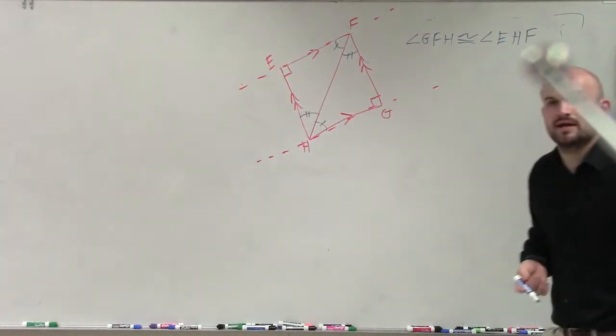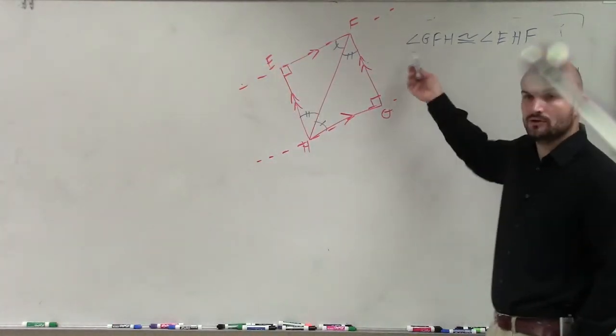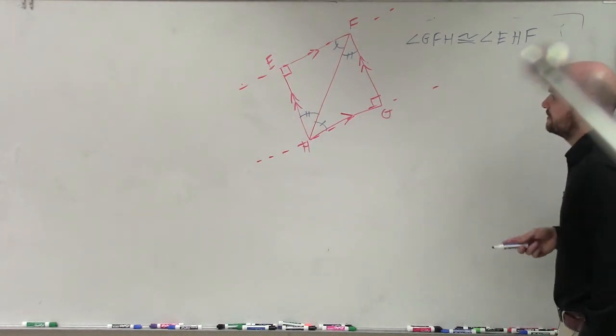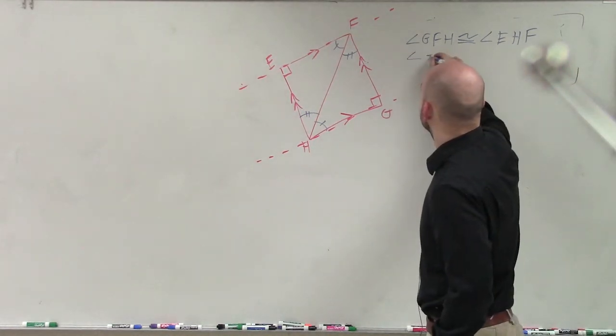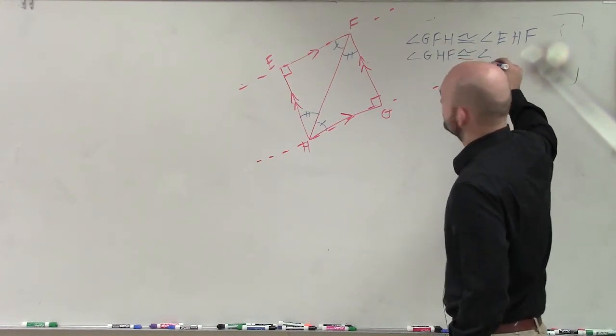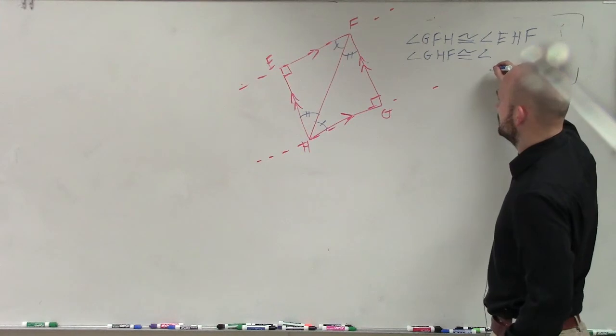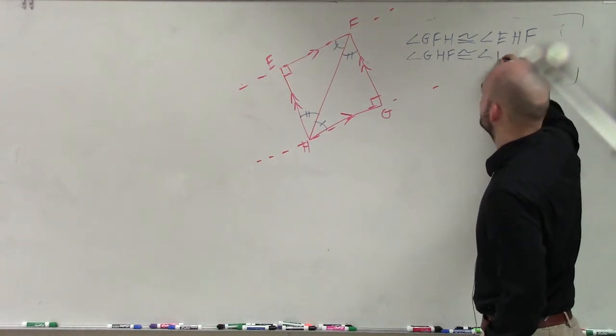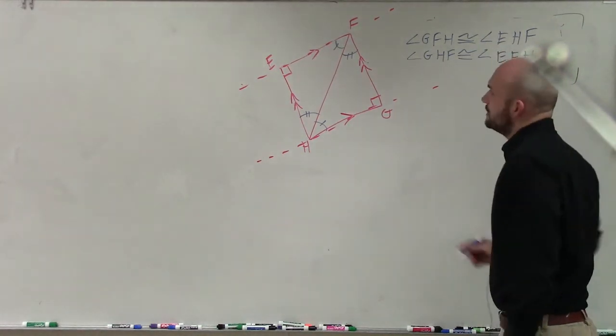You could also do this, though, with one angle letter. To do it on there, that's fine. And then I can also say angle GHF is congruent to angle E, F, H.